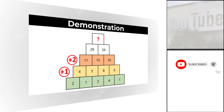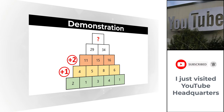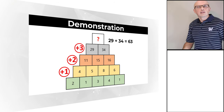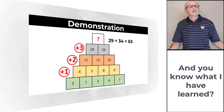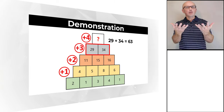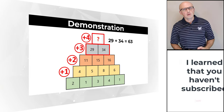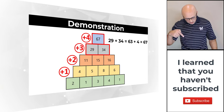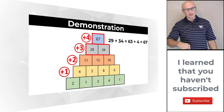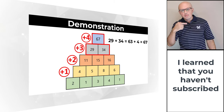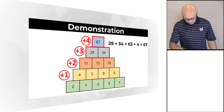Based on this information, the missing value can be calculated as 29 plus 34 plus the value of the increment, which would be plus 4, which equals 63 plus 4, which equals 67. So the correct choice here is Choice C, 67.